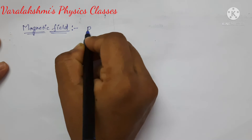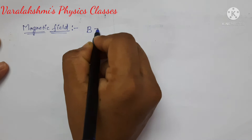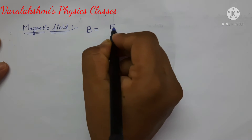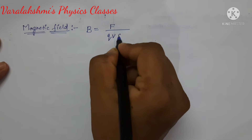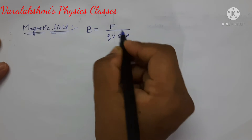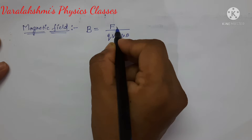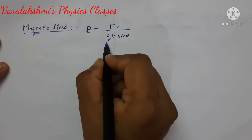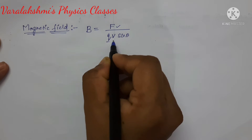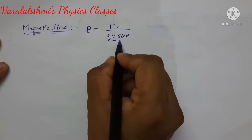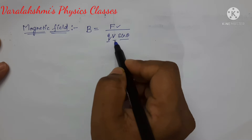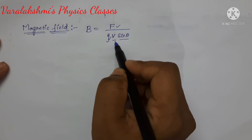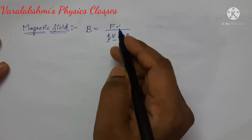The formula for magnetic field is B = F / (QV sinθ). Here F is the force, Q is the charge, V is the velocity, and sinθ is the trigonometric function. We will find the dimensions of force, charge, and velocity separately, then substitute them here.